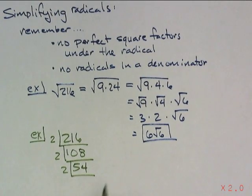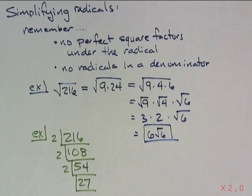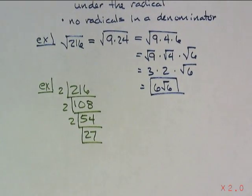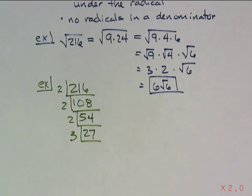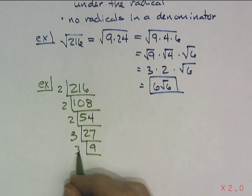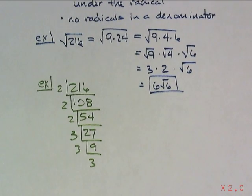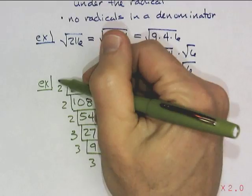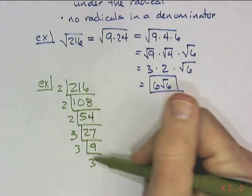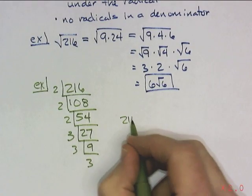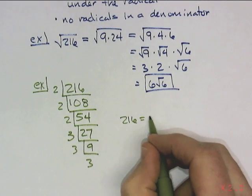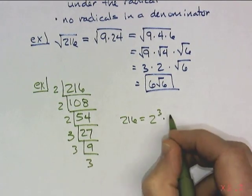2 goes into that 54 times. 2 goes into this 27 times. Now 27 is no longer even, so we go to 3, dividing by only prime numbers. 3 goes into 27 nine times. 3 goes into 9 three times. At this point we have the prime factorization of 216, which is 2 cubed times 3 cubed.